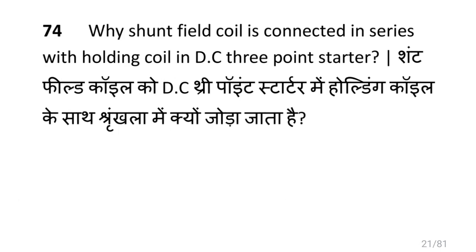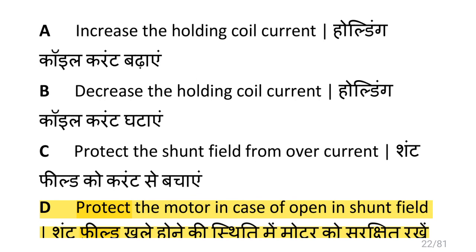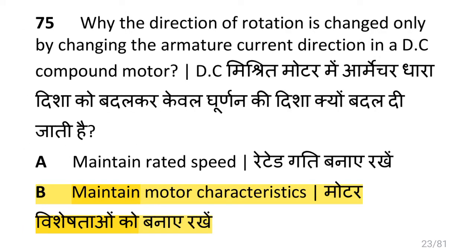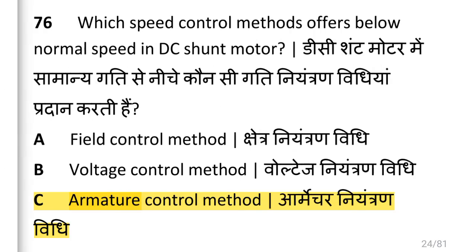Why is the shunt field coil connected in series with holding coil in DC three point starter? That is to protect the motor in case of open in shunt field. Why is the direction of rotation changed only by changing the armature current direction in a DC compound motor? Because it is necessary to maintain the motor characteristics.